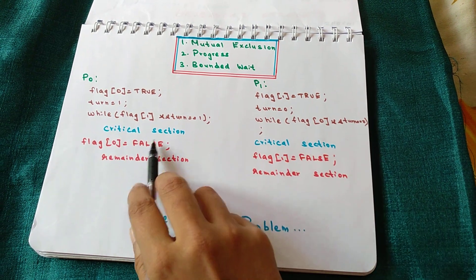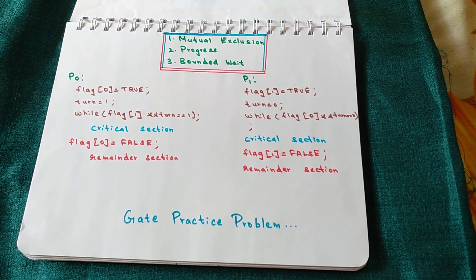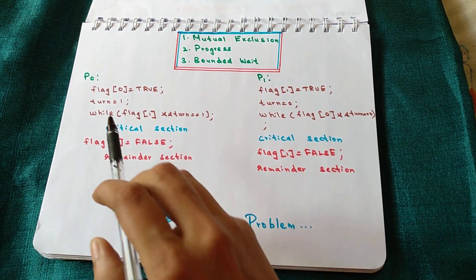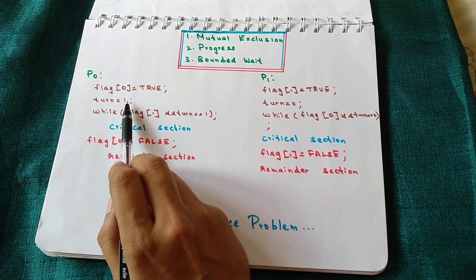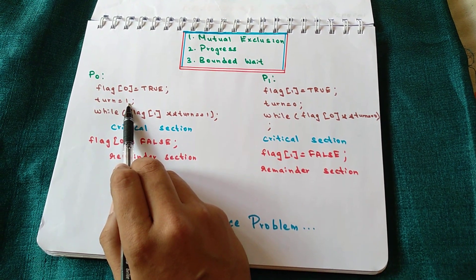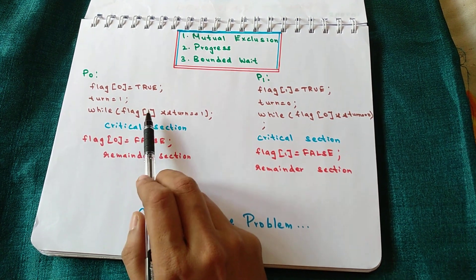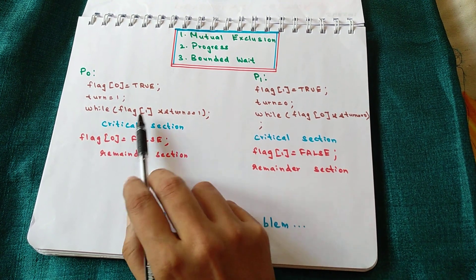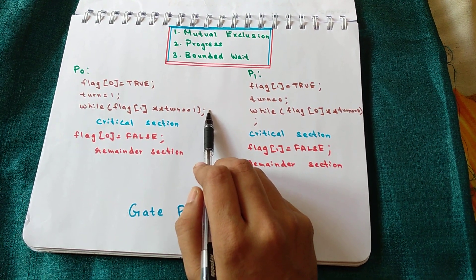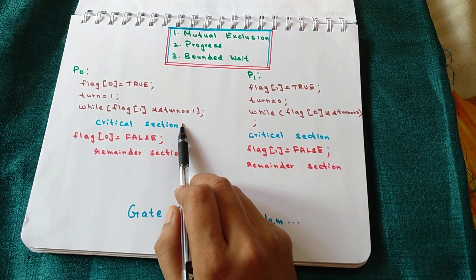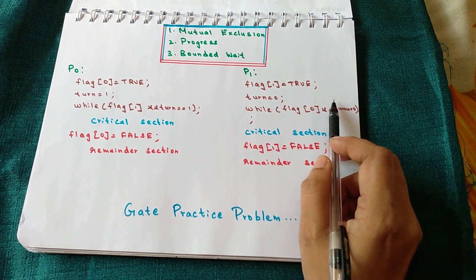Since this is a two-process solution, let's take processes P0 and P1 and look at the code for each. For process P0: if it wants to enter the critical section, it sets `flag[0]` to true and sets `turn` to 1 — indicating that if P1 wants to enter, it can. Then P0 checks whether `flag[1]` is true and `turn == 1`. If both are true, it loops infinitely. When one condition becomes false, P0 enters the critical section, executes its code, and then sets `flag[0]` to false.